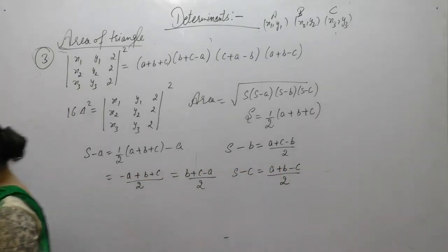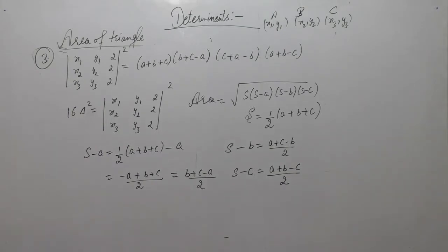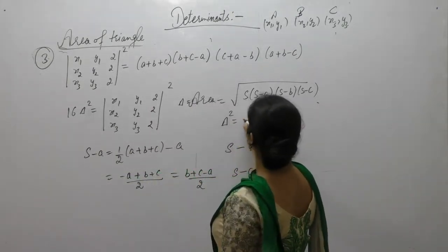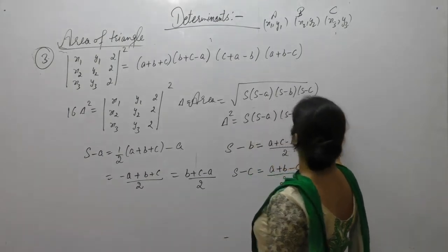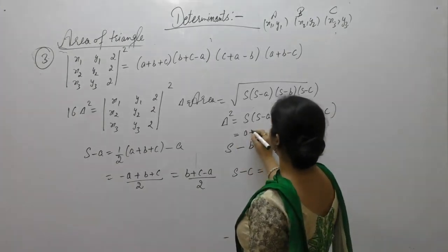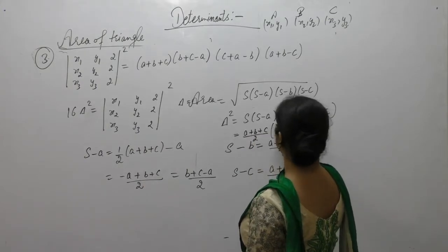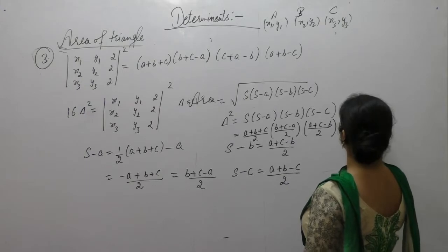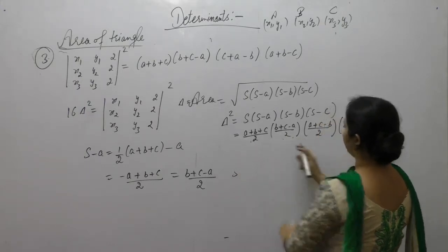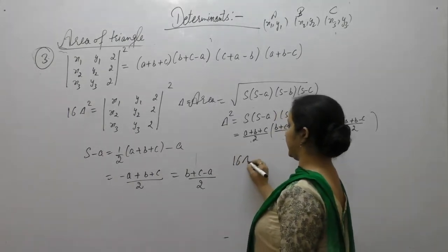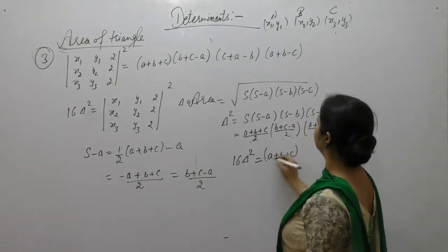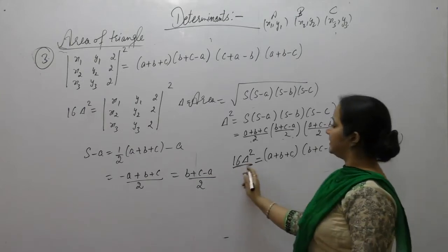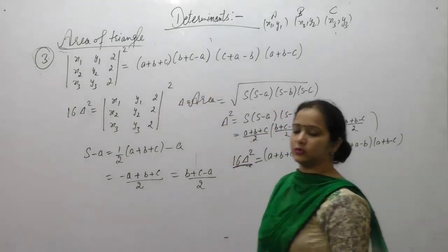Now put these values into the area formula. Squaring both sides, delta squared equals s·(s-a)·(s-b)·(s-c). Substituting: delta squared = (a+b+c)/2 · (b+c-a)/2 · (a+c-b)/2 · (a+b-c)/2. Multiplying, 16 delta squared equals (a+b+c)(b+c-a)(c+a-b)(a+b-c), so 16 delta squared equals this expression and the determinant squared equals this value.